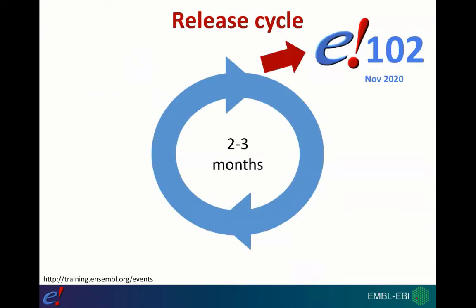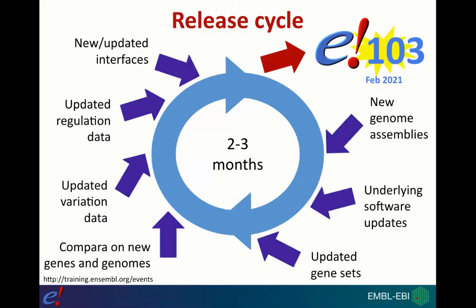An important thing to remember when using both Ensembl and Ensembl Genomes is that we work with a release cycle. Approximately every three months we release a new version of Ensembl that includes the most up-to-date data and annotation. For example, in November of last year we released Ensembl 102, which is the current version. We're currently looking for new genome assemblies, updating software, re-performing annotation and comparative analyses, and updating variation and regulation databases. In February, next month, we'll release Ensembl 103 as the new current version.